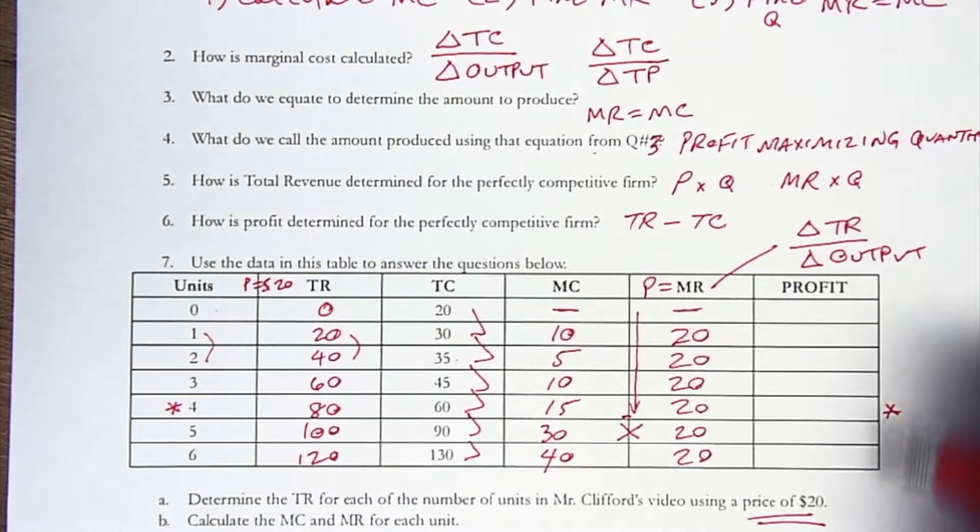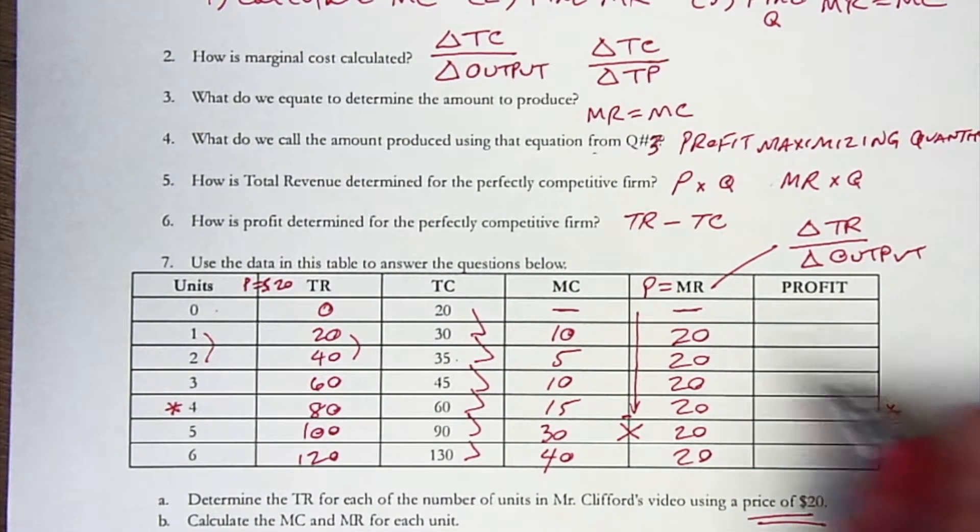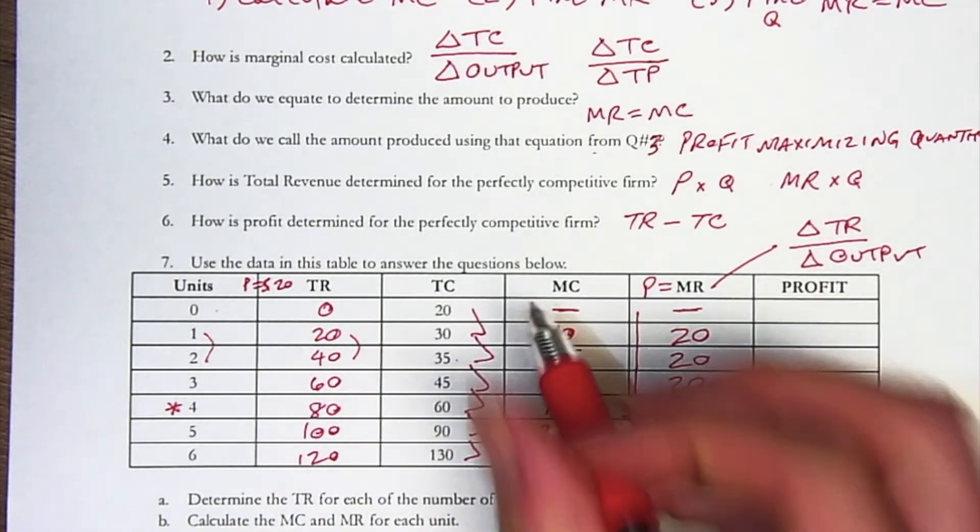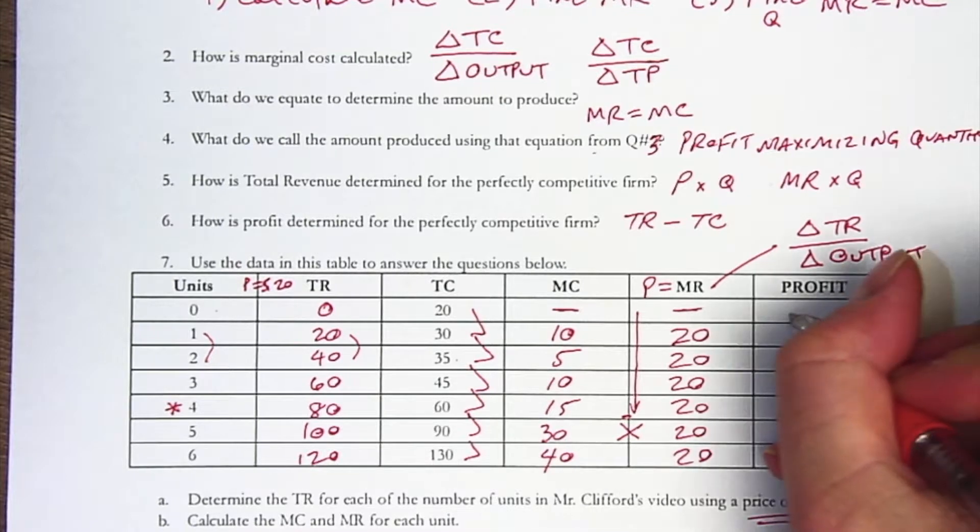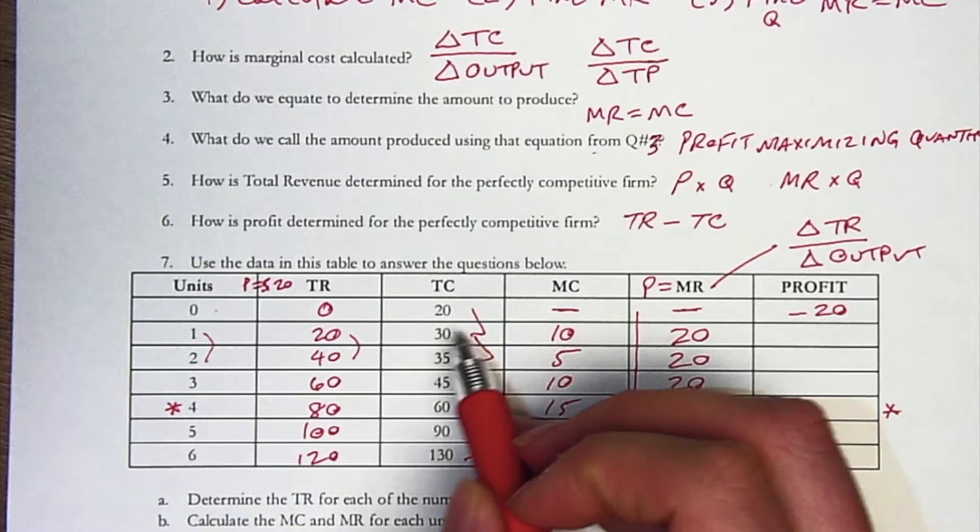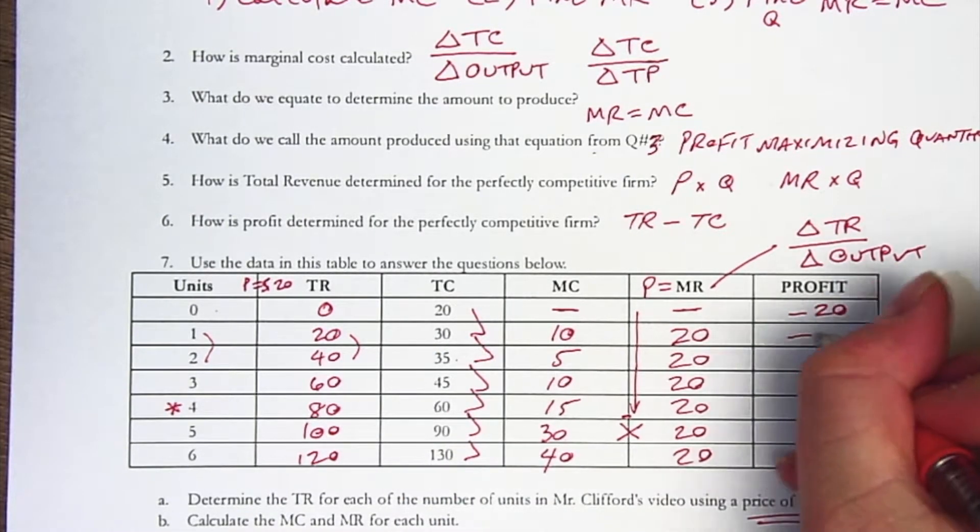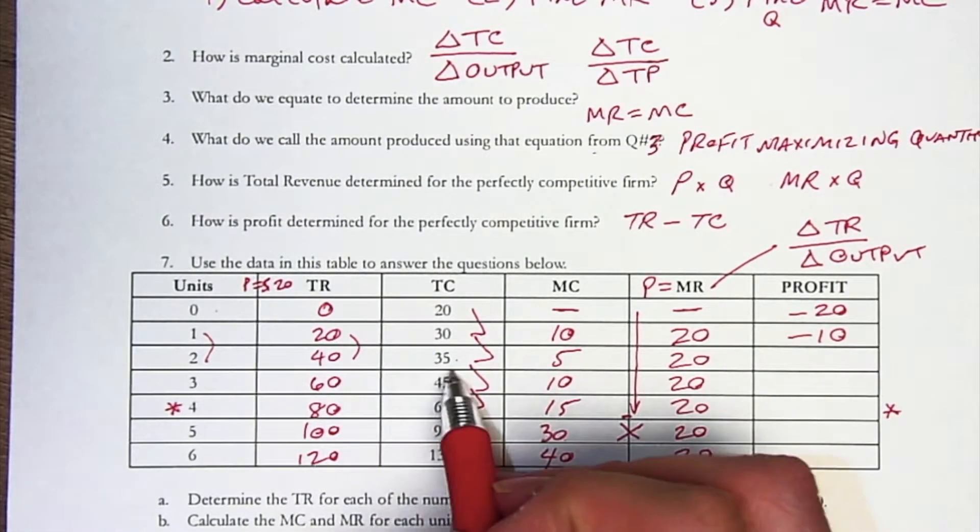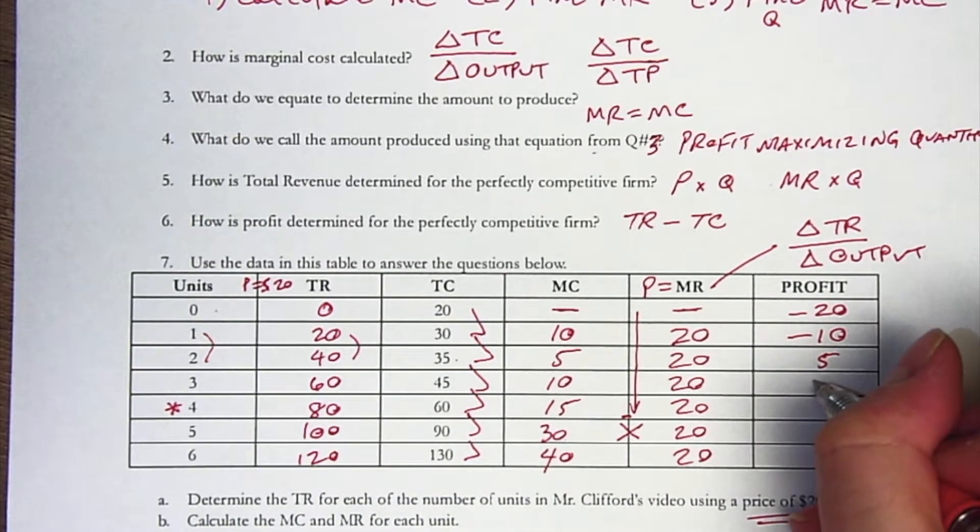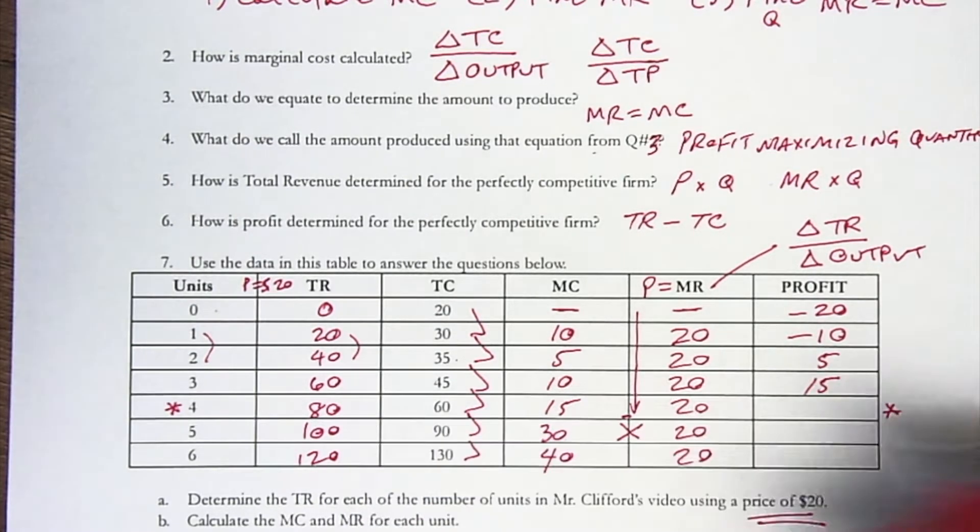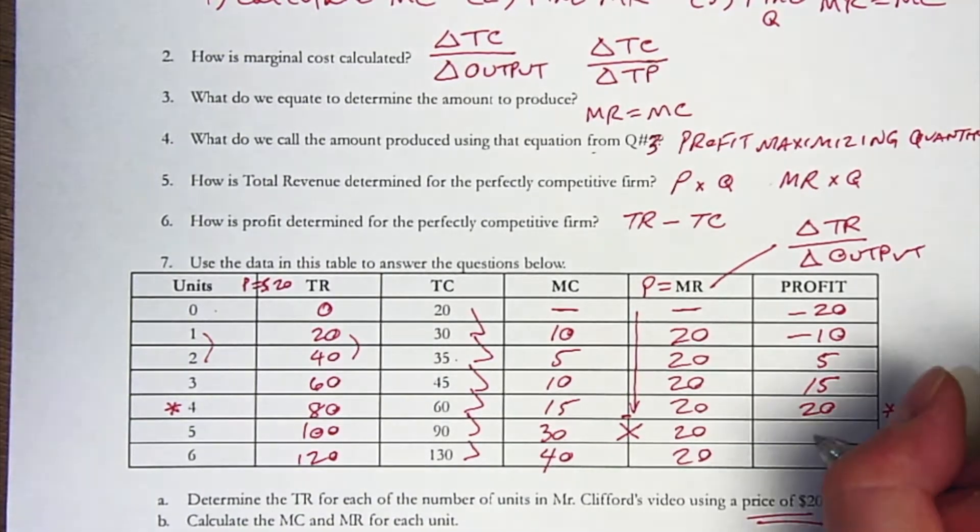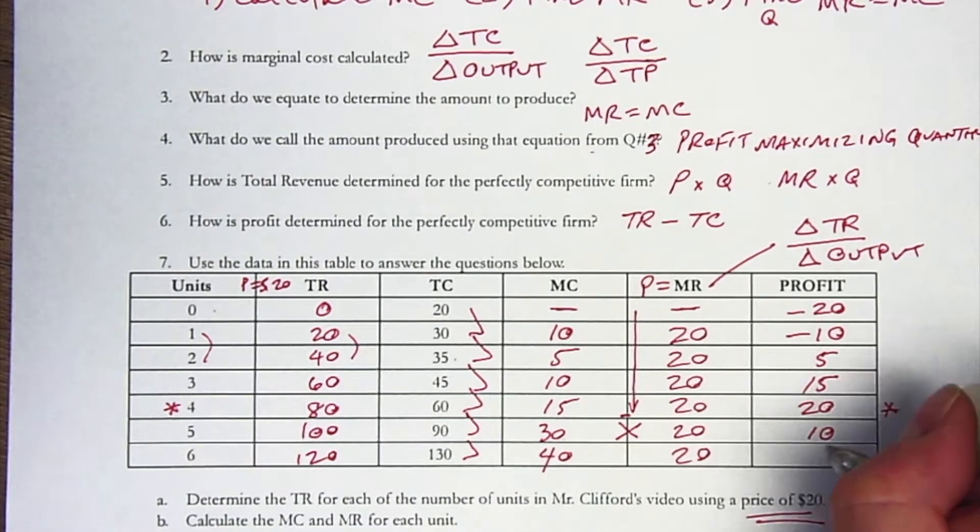Now let's prove it by actually figuring out what the profit values are. We wouldn't want to produce where cost exceeds revenue, but right before it is a good idea. For the first one, total revenue minus total cost is negative 20. For the next one, 20 minus 30 is negative 10. Then 40 minus 35 is 5. 60 minus 45 is 15. 80 minus 60 is 20. 100 minus 90 is 10. And 120 minus 130 is negative 10.